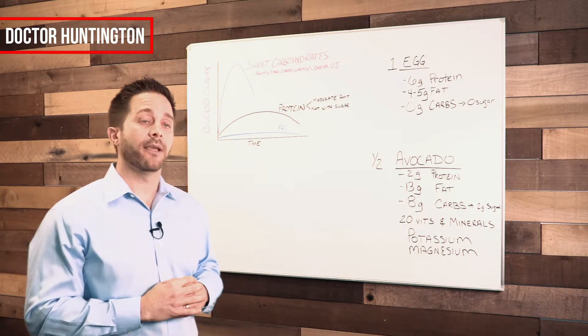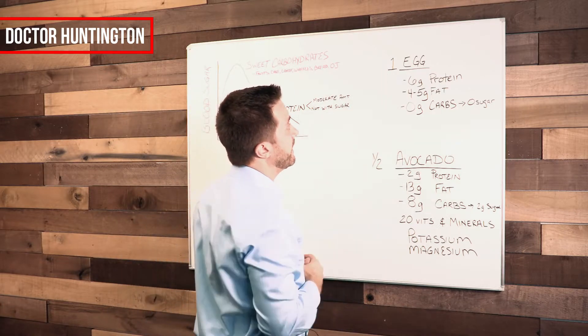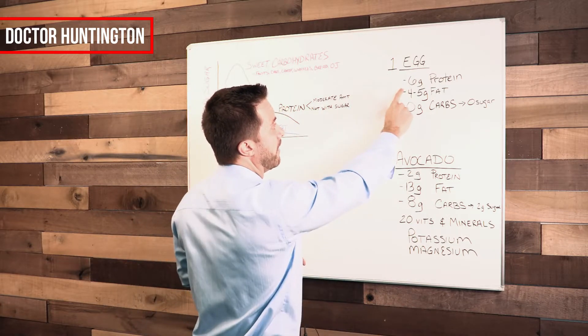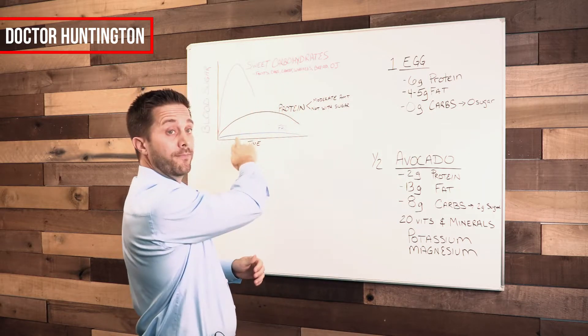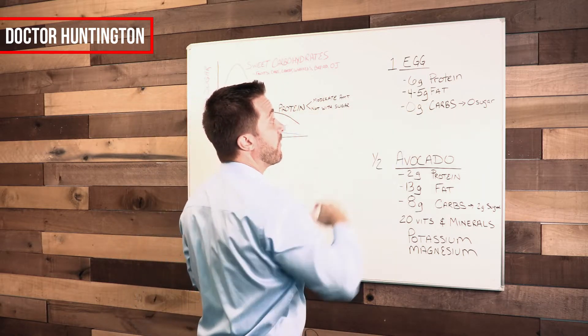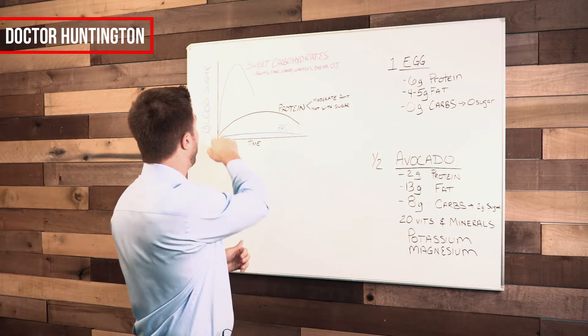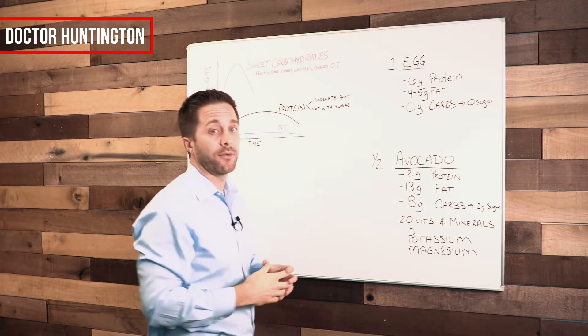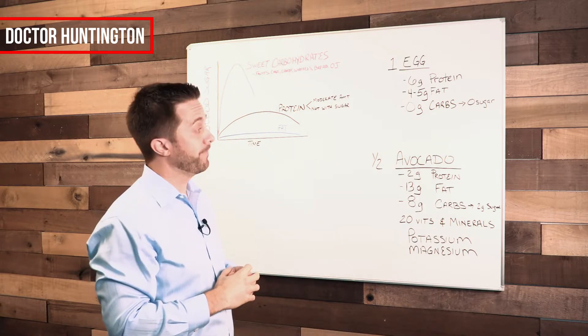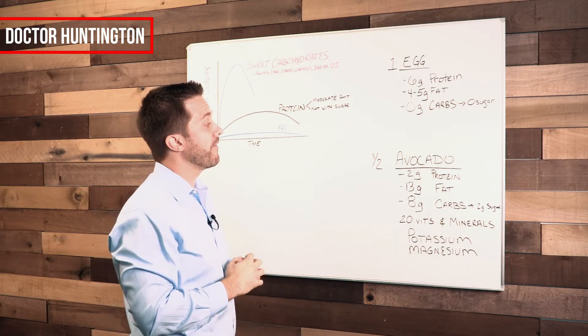Let's take a look here at eggs. Here I've got some data on eggs. One egg will contain six grams of protein - protein's good. Four to five grams of fat, with regards to blood sugar that's good, and zero carbohydrates. And of course that means zero sugar.